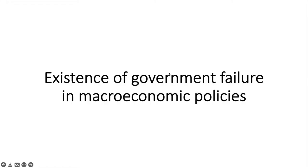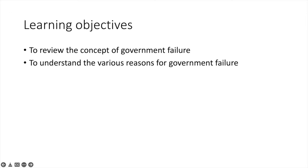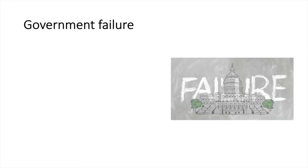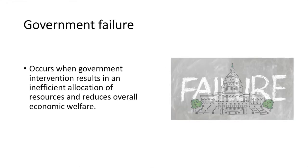In this video we'll review the concept of government failure and explore the various reasons for government failure in a macroeconomic context. Government failure occurs when government intervention results in an inefficient allocation of resources and reduces overall economic welfare. There are many reasons why this may occur and we're going to look at several of them, starting with corruption.